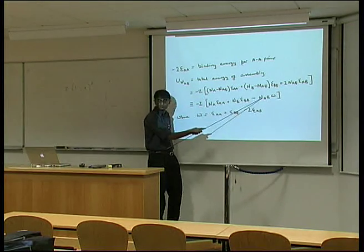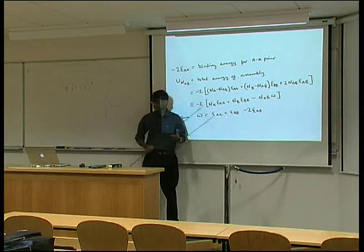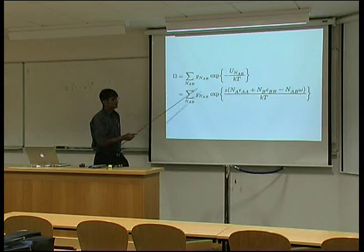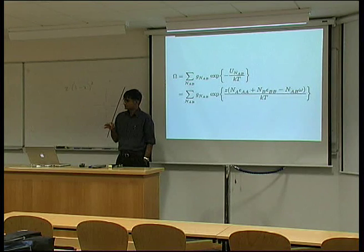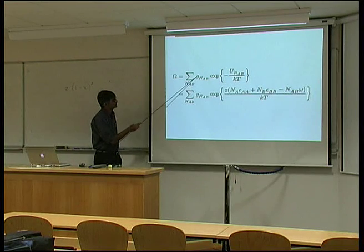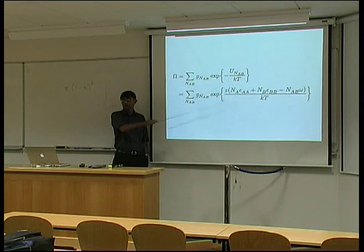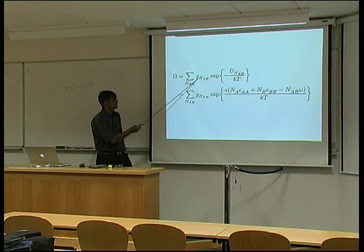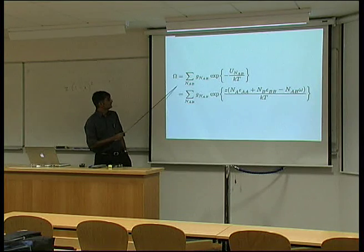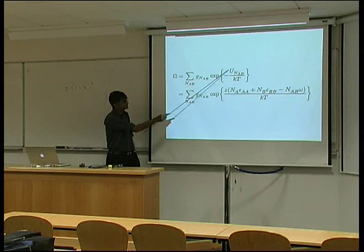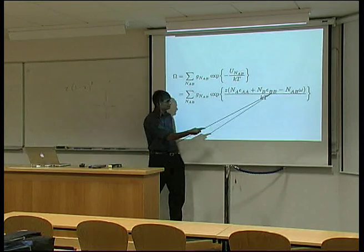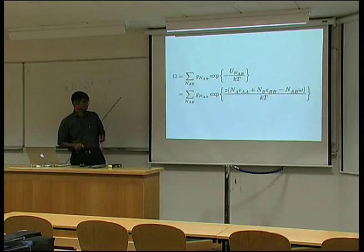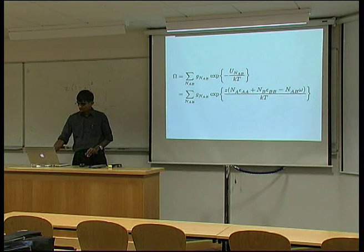We don't actually know the number of AB bonds as yet. We can have many different arrangements of atoms, so we simply substitute into the partition function the energy corresponding to each arrangement. Each particular arrangement will have a particular degeneracy, and we have our partition function expressed in terms of quantities we can measure — omega, epsilon_BB, epsilon_AA.